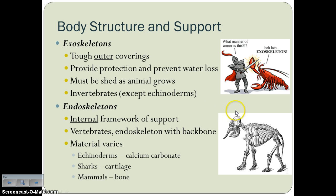Speaking of invertebrates and vertebrates, a couple of terms you need to know: exoskeletons and endoskeletons. 'Exo' means outer or exiting, so exoskeletons are tough outer coverings that provide protection and prevent water loss. They have to be shed as the animal grows — like insects, they have to shed their exoskeleton in order to grow larger. Most invertebrates have exoskeletons, except for echinoderms — like starfish — which are the exception to that rule.